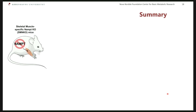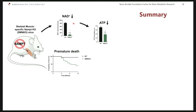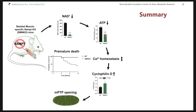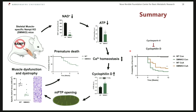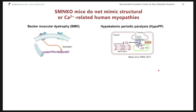In summary: lack of NAMPT in muscle leads to premature death. It is crucially important to maintain NAD levels in muscle. This lowers ATP levels — energy homeostasis is disrupted — and calcium homeostasis is perturbed. We have increased cyclophilin D, which leads to mitochondrial permeability transition pore opening, probably causing muscle dysfunction and muscular dystrophy, which we believe is the cause of death. And we can rescue this effect by providing an inhibitor of cyclophilin D.